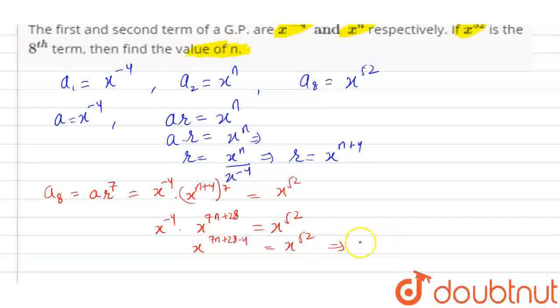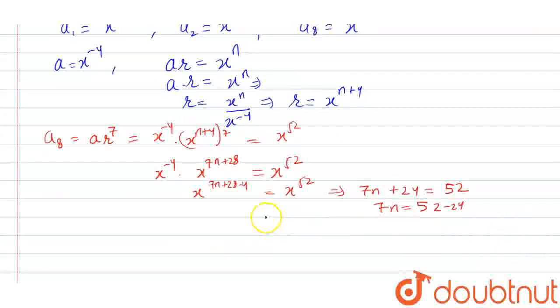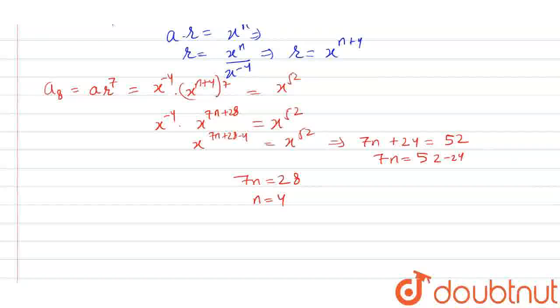Now 7n plus 24 is equal to 52. 7n is equal to 52 minus 24, that is 7n is equal to 28. So n is equal to 4. So the value of n is equal to 4.